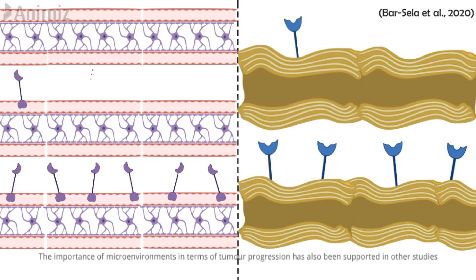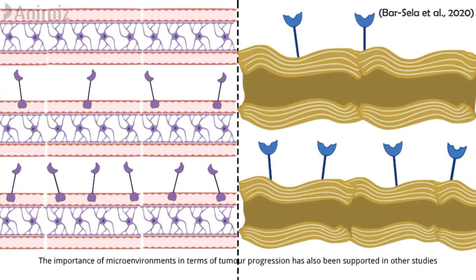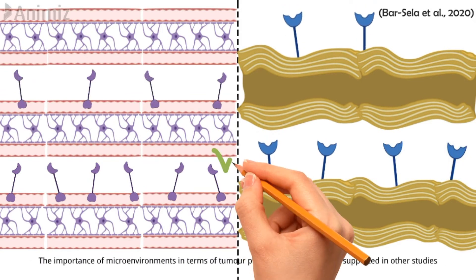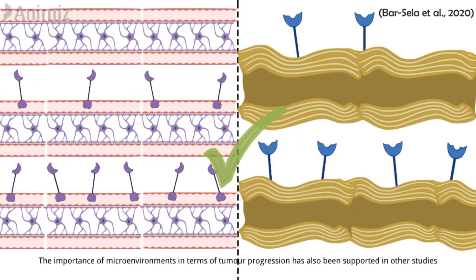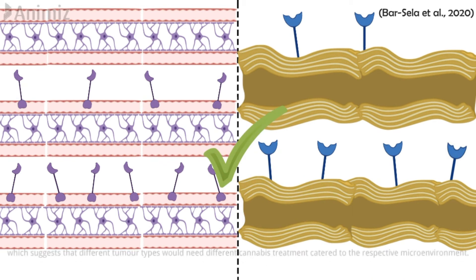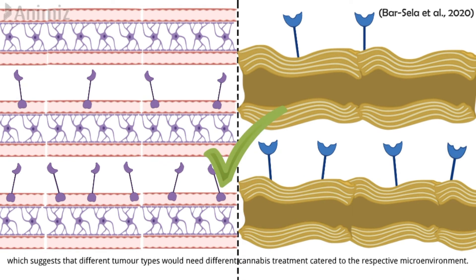The importance of microenvironments in terms of tumor progression has also been supported in other studies, which suggests that different tumor types would need different cannabis treatments catered to that respective microenvironment.